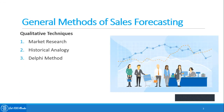The Delphi method conceals the identity of the individuals participating in the forecasting, so everyone has the same weight. Procedurally, a moderator creates a questionnaire and distributes it to participants. Their responses are summarized and given back to the entire group along with a new set of questions.